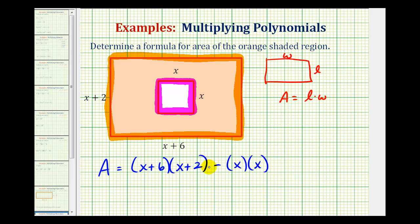So this is the correct formula, let's go ahead and multiply this out. So here we'll have four products. We'll have x times x, x times two, six times x, and six times two.